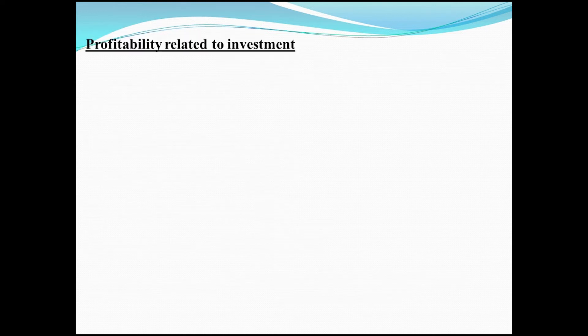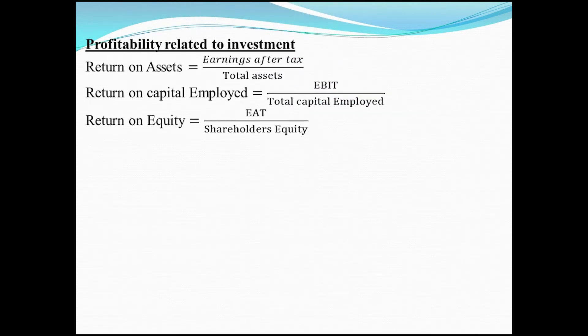The second group is profitability related to investment, which includes return on assets, return on capital employed, and return on equity. Return on assets equals earnings after tax divided by total assets. Return on capital employed equals EBIT divided by total capital employed. Return on equity equals earnings after tax divided by shareholders' equity.